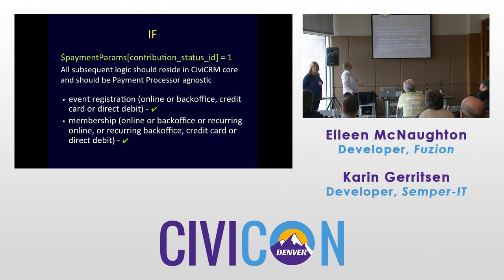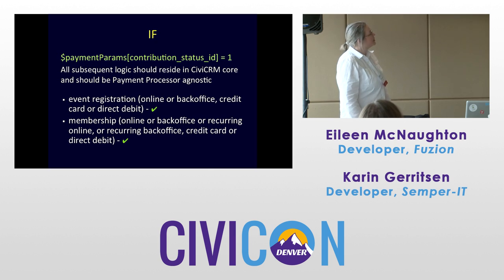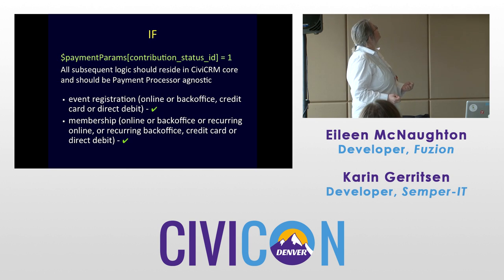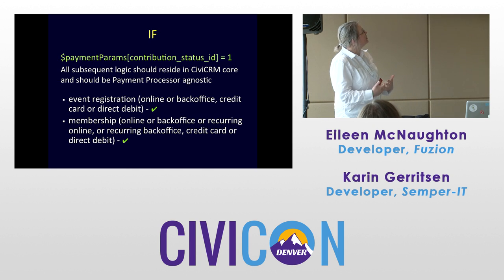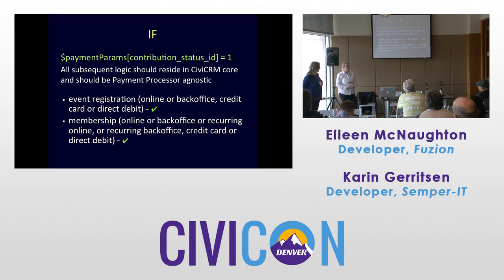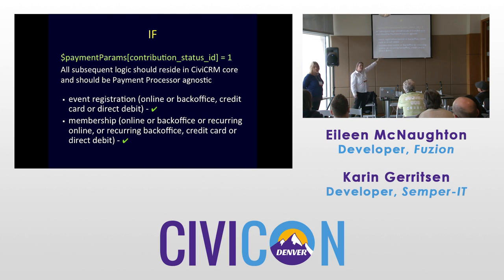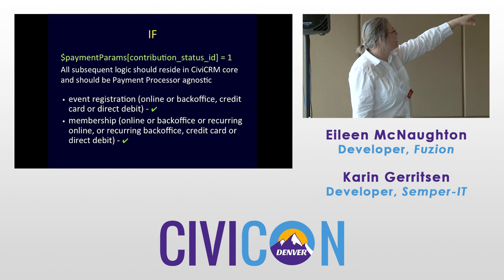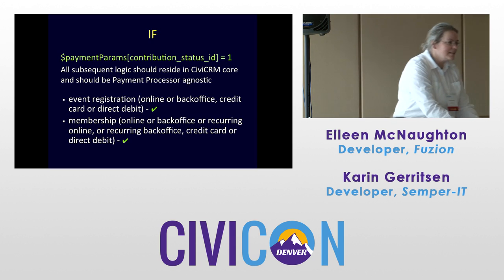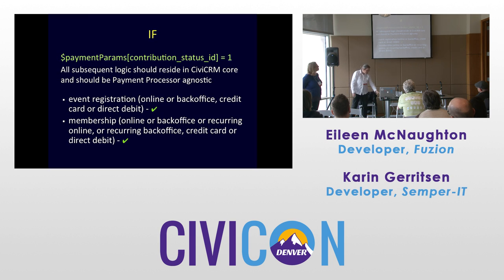The bottom line: if the payment processor returns a successful result — if contribution status ID is 1, a completed transaction — the rest should reside in core and be payment-processor agnostic. This was successful: send out the receipt, mark the membership as completed. The event registration, whether online or back office, doesn't matter — we're telling core it was successful. Go update the contribution, the membership, the event registration, and send the receipt, regardless of whether it was recurring, ACH, or direct debit.